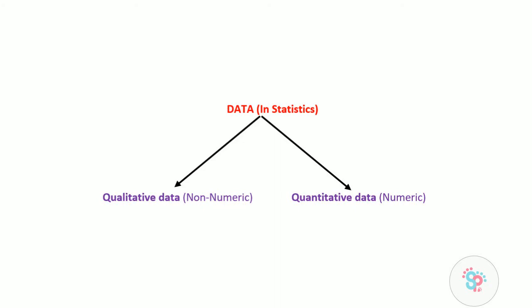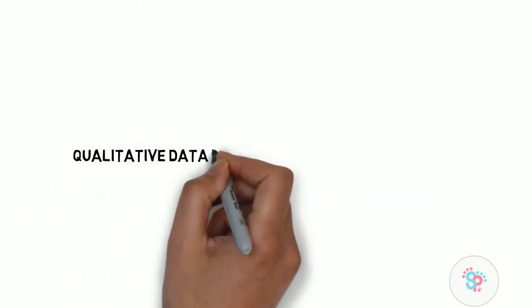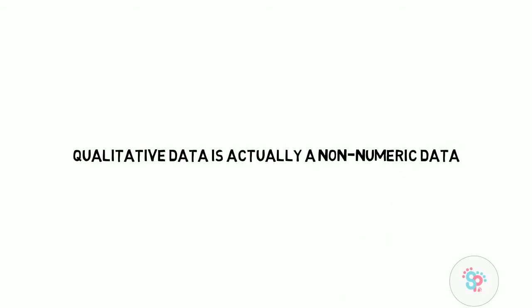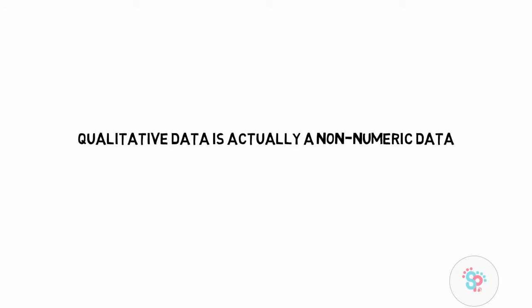In statistics, qualitative data is also called categorical data, because it is often grouped into categories. For this video we will be focusing on qualitative data. Qualitative data is a non-numeric data.